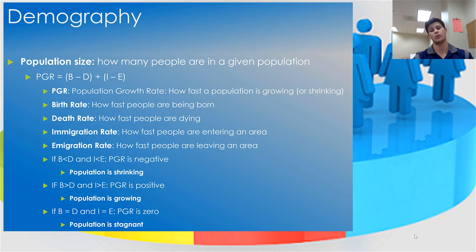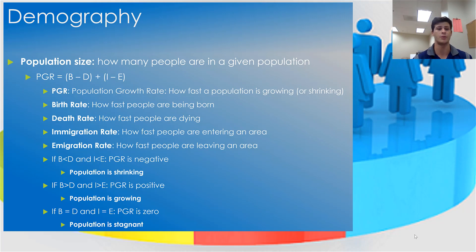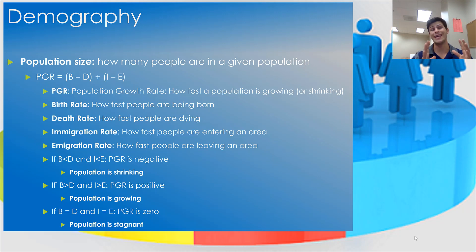The first variable we look at in demography is population size. Recall from chapter three when we discussed population growth rates and population ecology — things like the birth rate, death rate, immigration rate, and emigration rate. Remember we called the birth rate natality and the death rate mortality, though those terms can be used interchangeably. Because immigration and emigration sound so similar when speaking quickly, I'm going to refer to each variable by its letter and ask you to follow along.